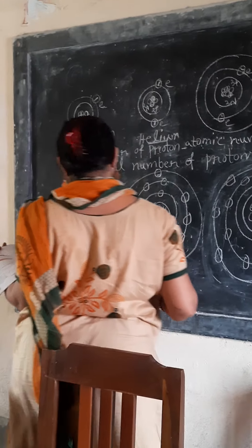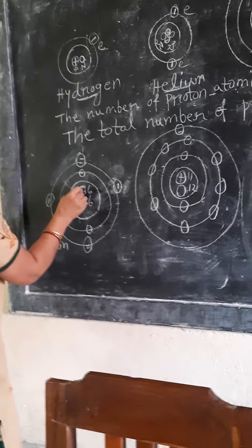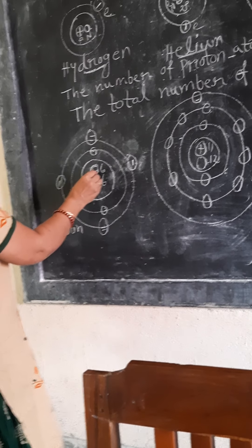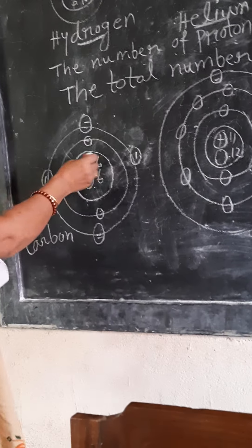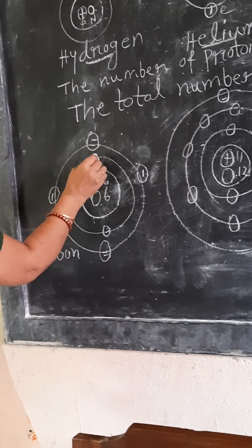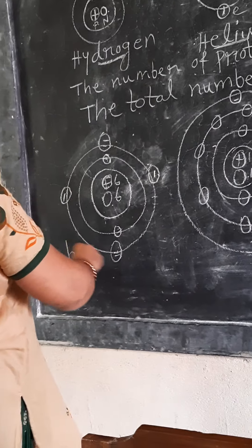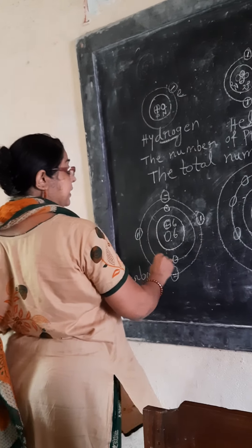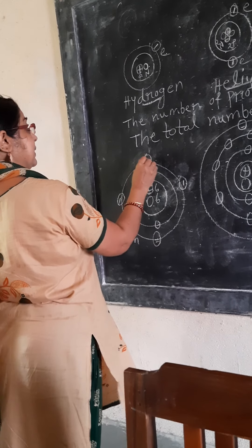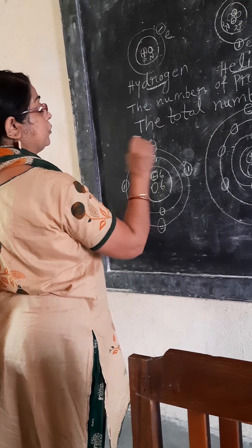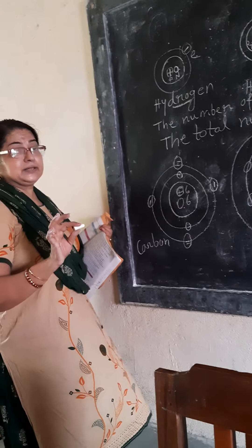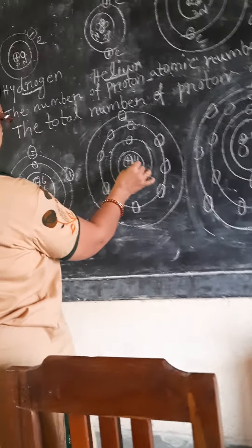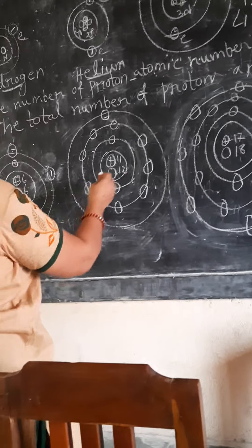Now, what is it? Carbon. In carbon, there are 6 protons and 6 electrons. The proton number is the same. The first orbit has two electrons, and then 1, 2, 3, 4. Total electron number is six. Protons are the same. Electron is 11 and neutron is 12 — this is sodium.